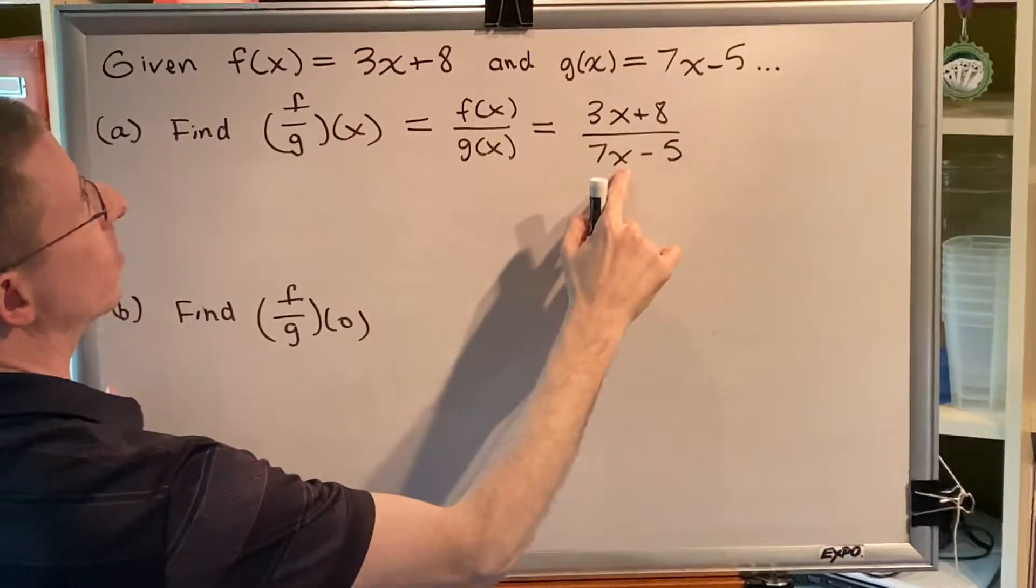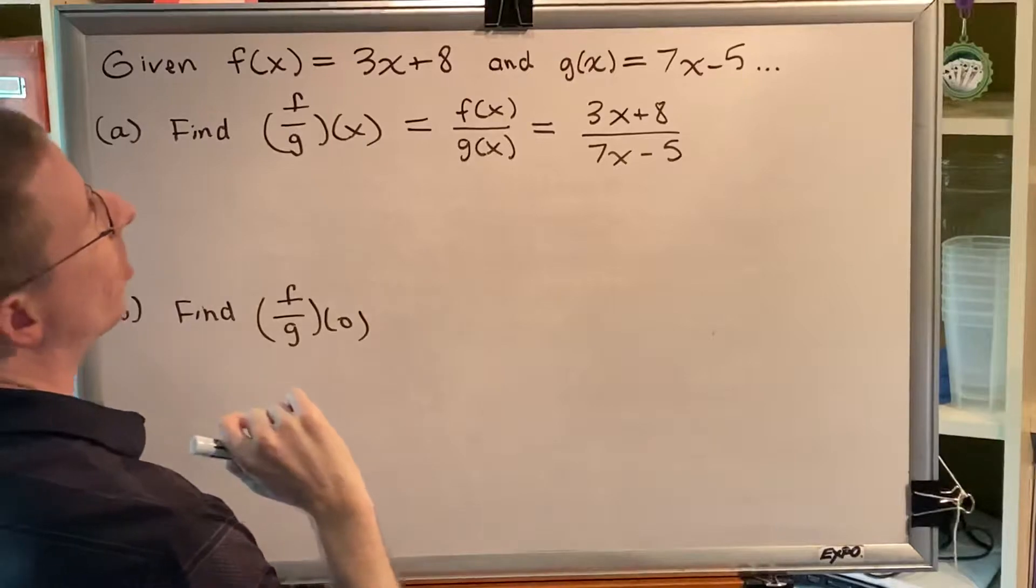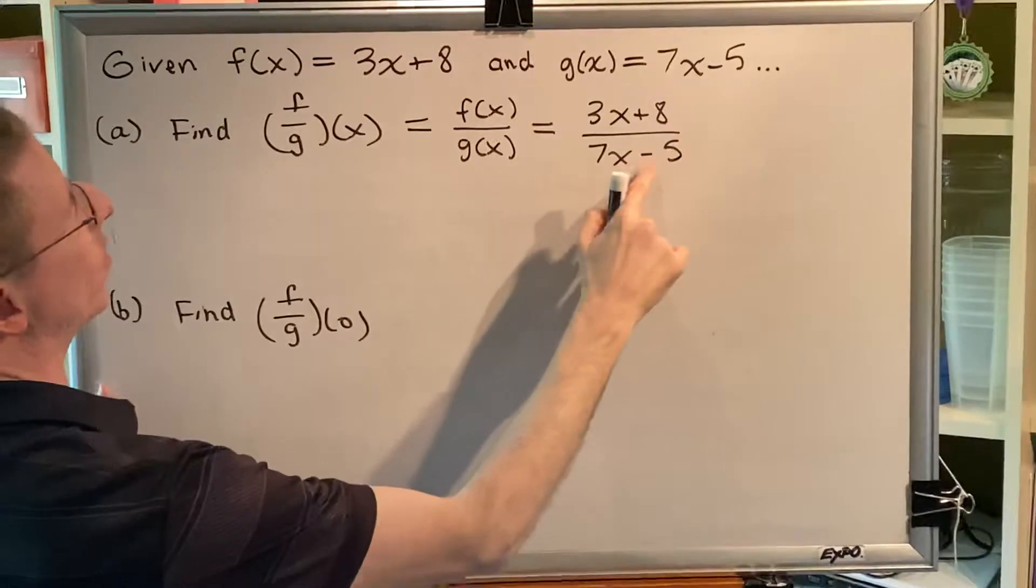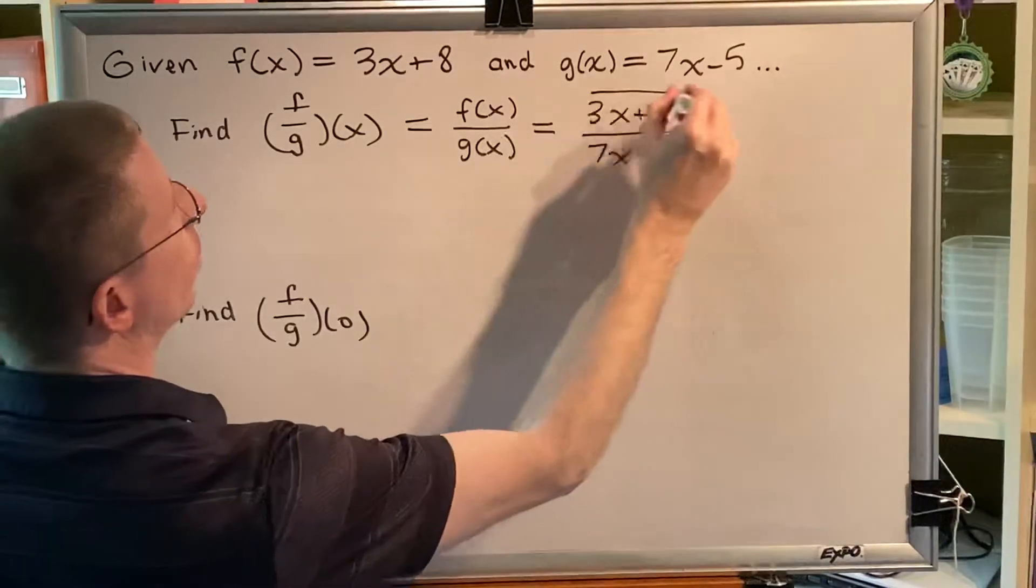You cannot cancel this x with this x because they are not factors. This x is next to a plus sign. This x is next to a subtraction sign. So this is our final answer.